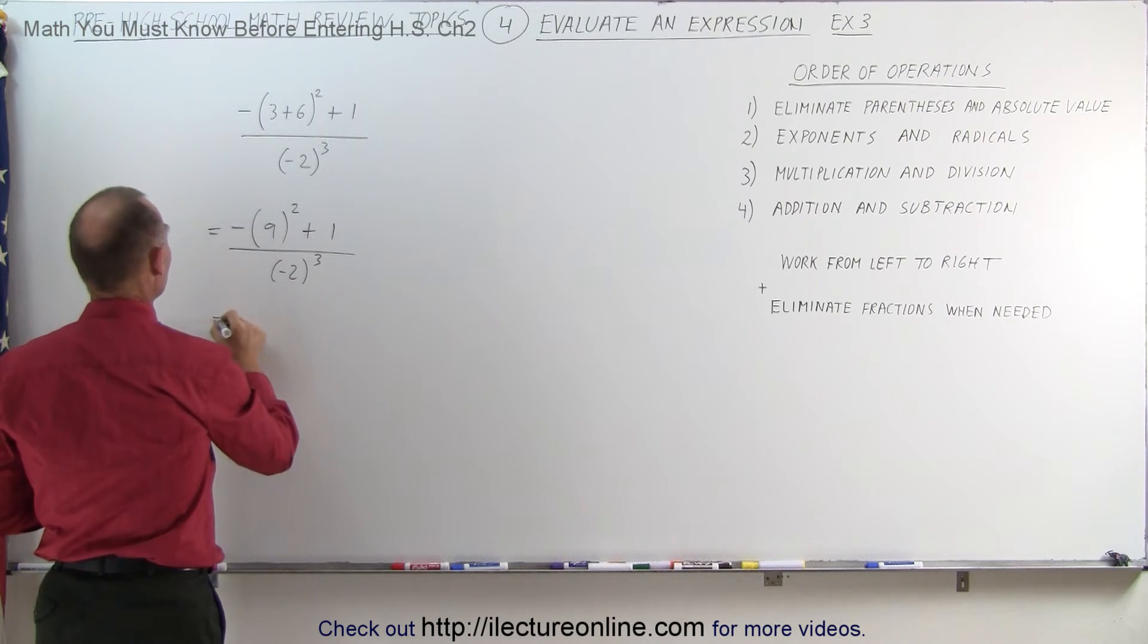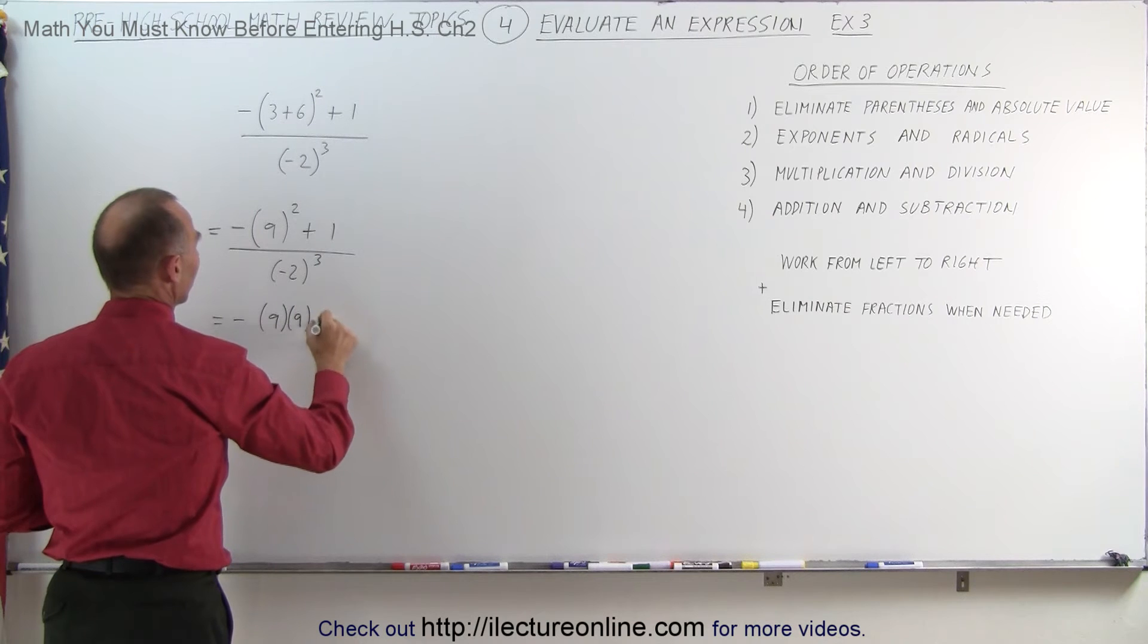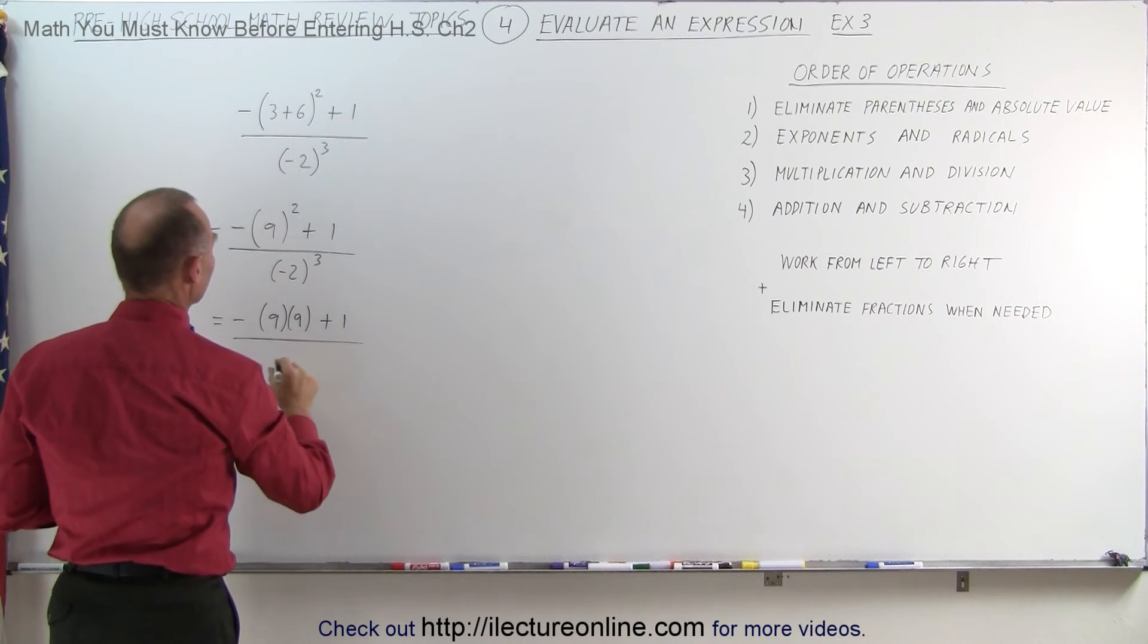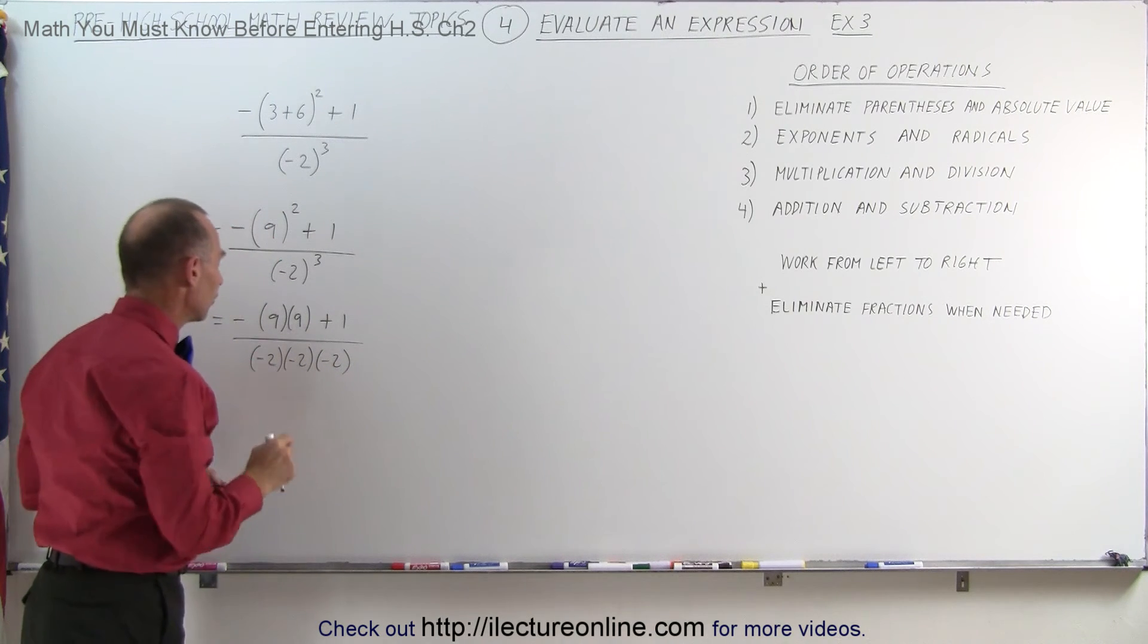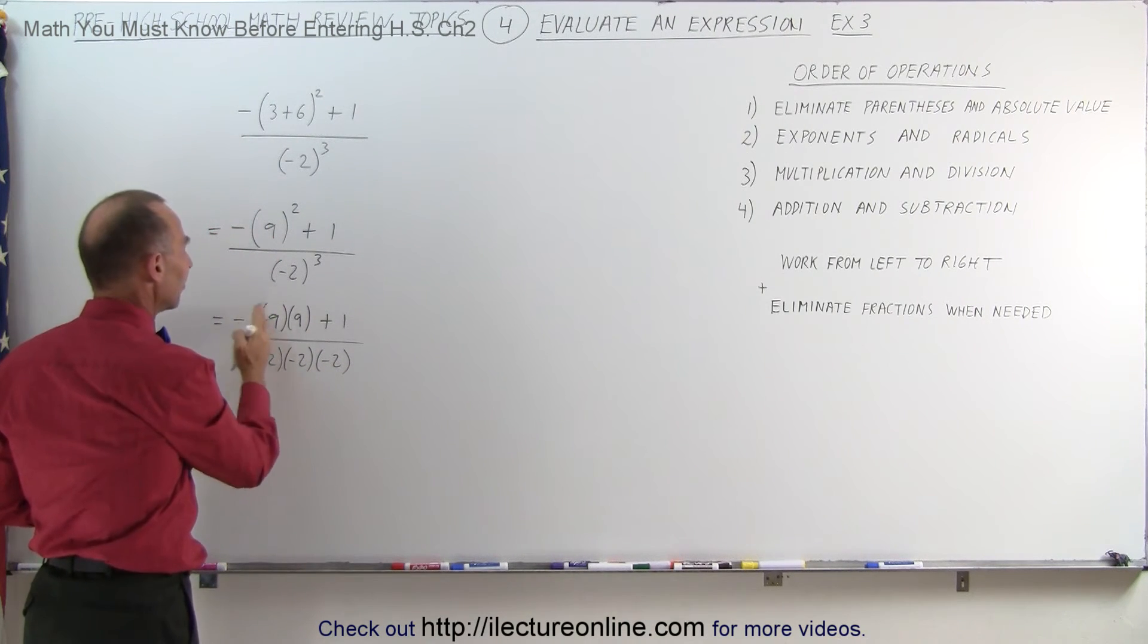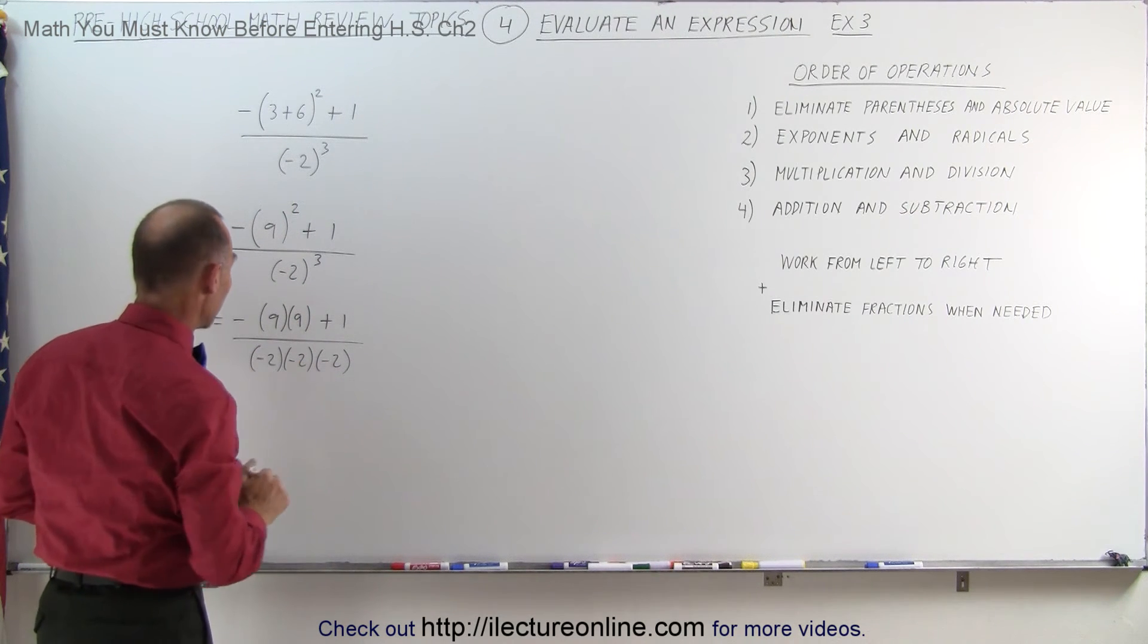So next we can write it out. This is equal to negative 9 times 9 plus 1. And in the denominator, this is equal to negative 2 times negative 2 times negative 2. Notice the negative sign here is outside; it's not affected by the exponent. Here the negative sign is inside, and it is affected by the exponent.